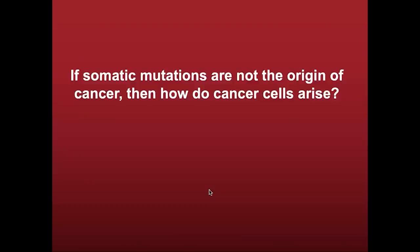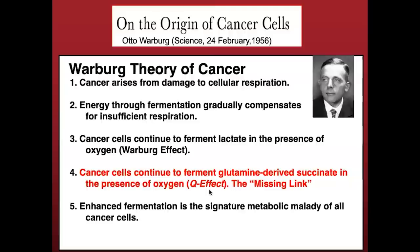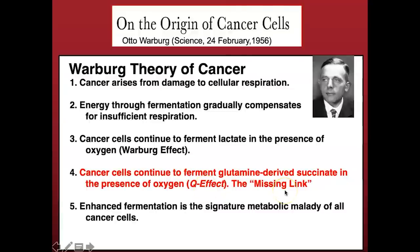So if somatic mutations are not the origin of cancer, how do we get cancer? This was described originally by the work of Otto Warburg back in the 1920s, 30s, and 40s. Cancers arise from damage to cellular respiration; energy through fermentation gradually compensates for insufficient respiration. Cancer cells continue to ferment lactic acid in the presence of oxygen — this is referred to as the Warburg effect. The new findings that myself and Dr. Chinopoulos from Semmelweis University in Budapest found represent the missing link in Warburg's central theory: cancer cells can also ferment succinic acid derived from glutamine. We call this the Q effect, where Q is the single letter for glutamine.